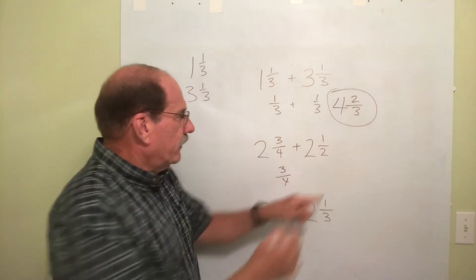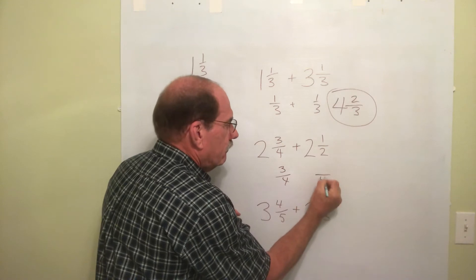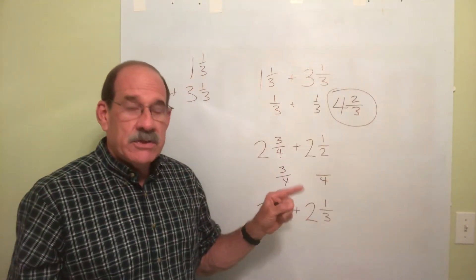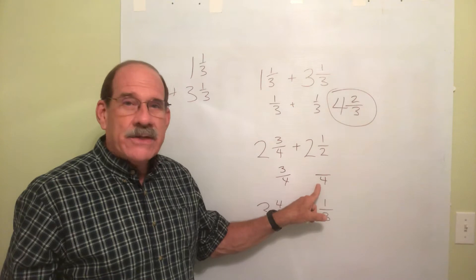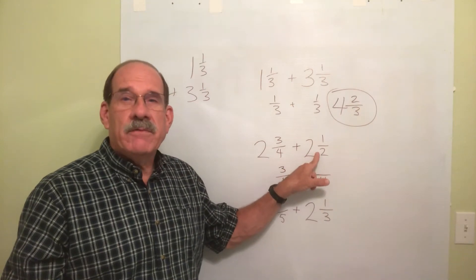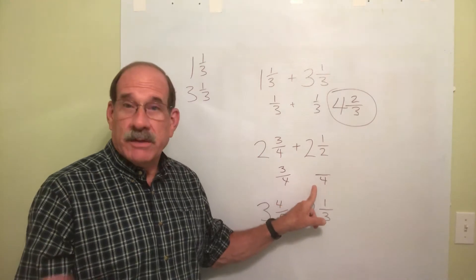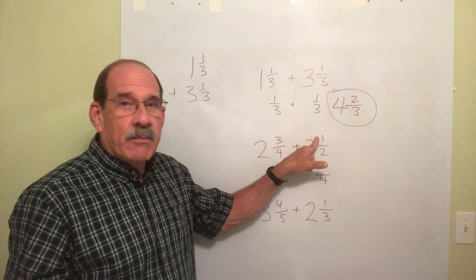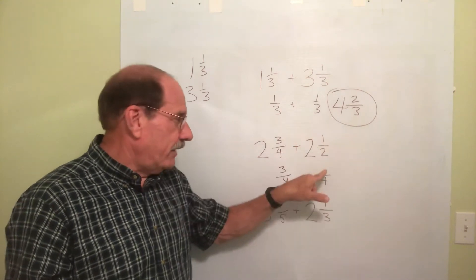But now let's convert the 1 half into a fraction. Let's enlarge that into a fraction with 4 as the denominator. So what do you do to the 2 to convert it into a 4? Well, you multiply by 2. So the top, we also multiply by 2. Well, that makes it 2.